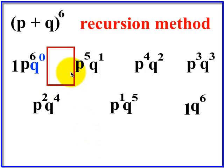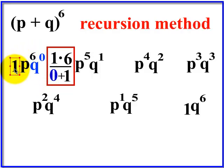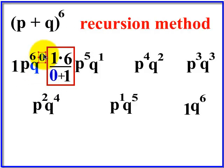We're going to build the coefficient of the second term following this algorithm. You take the factor of the first term, which is one, and multiply it by the exponent of the p from the previous term. Then divide that by one more than whatever the q exponent is of the previous term. So you get six divided by one, which equals six.